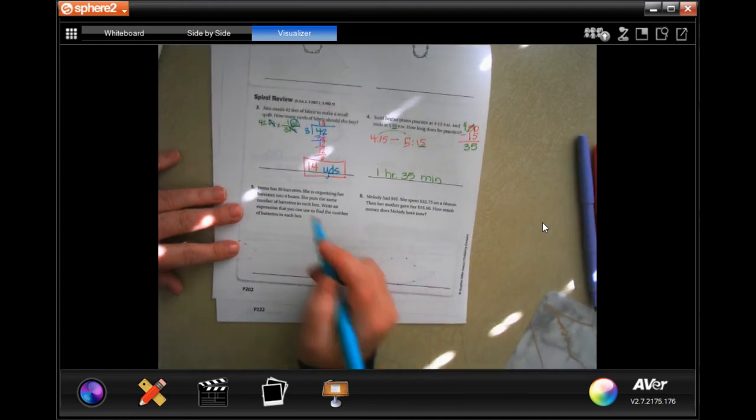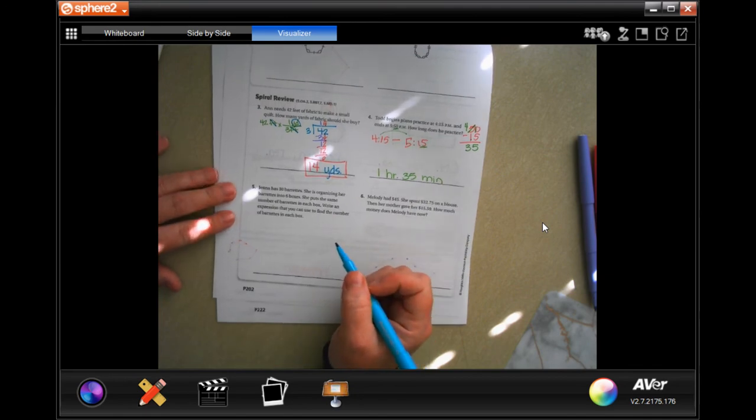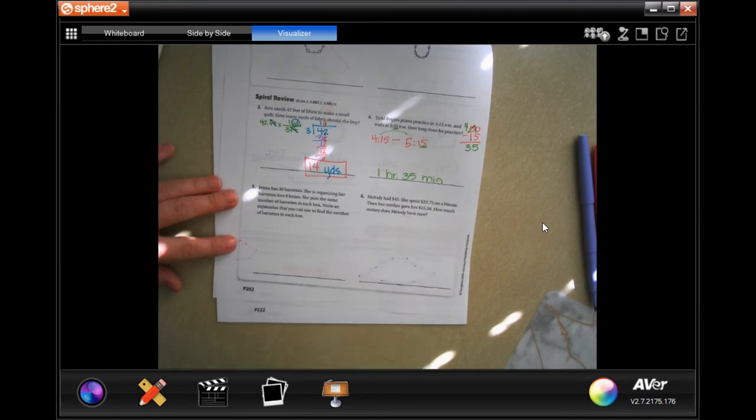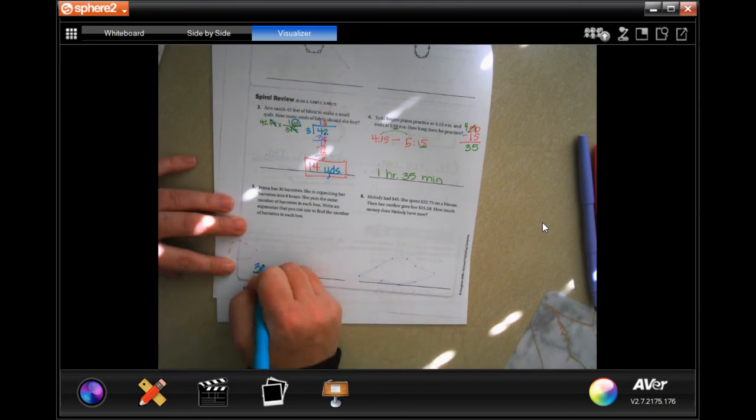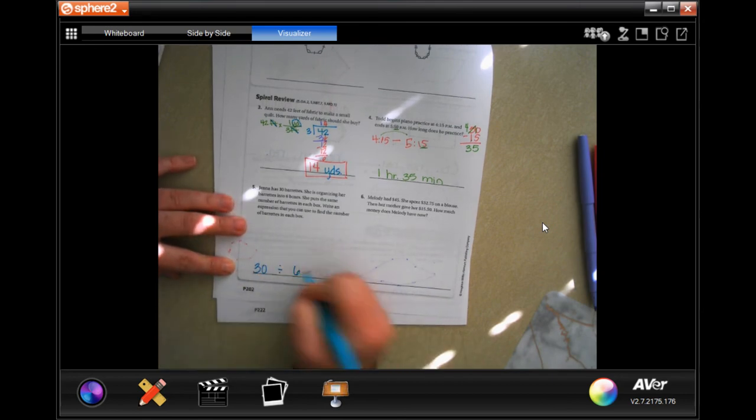Jenna has 30 barrettes. She is organizing her barrettes into six boxes. She puts the same number of barrettes in each box. Write an expression you can use to find the number of barrettes in each box. Well, she's got 30 barrettes and she's dividing them into six boxes. Done.